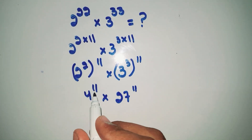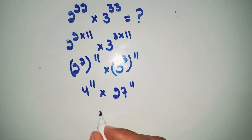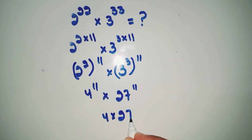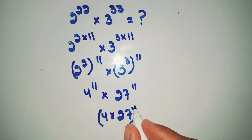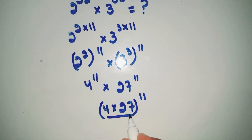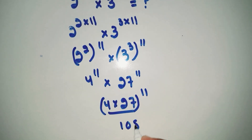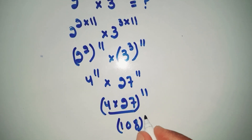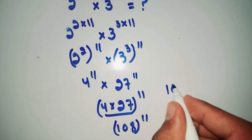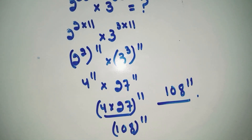Now when the powers are the same, we just multiply the bases. So we write this as 4 multiply by 27, whole power 11. Now 4 multiply by 27 is equal to 108, so our answer is 108 power 11. This is our answer.